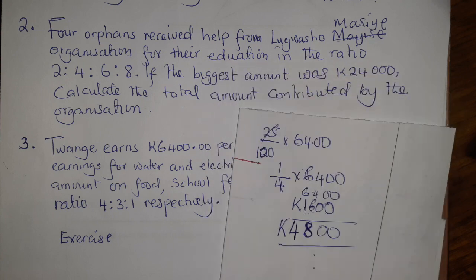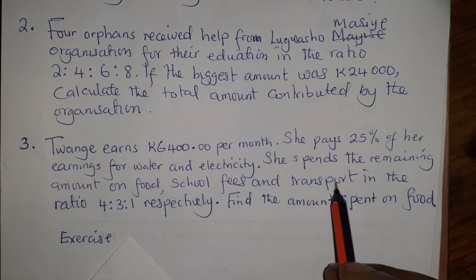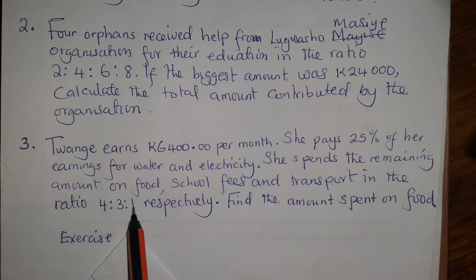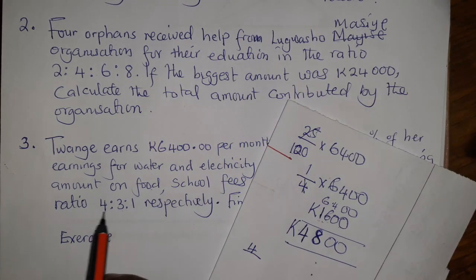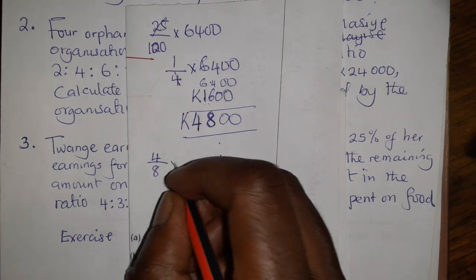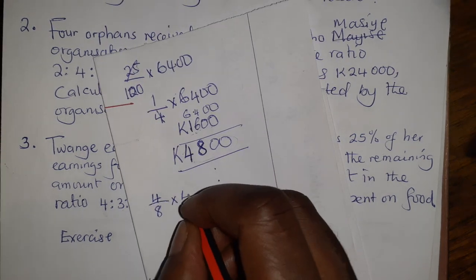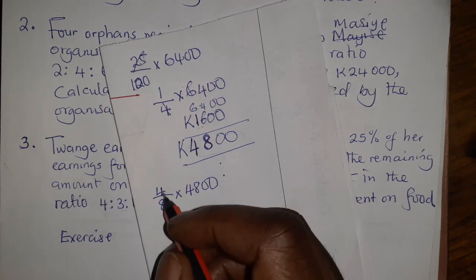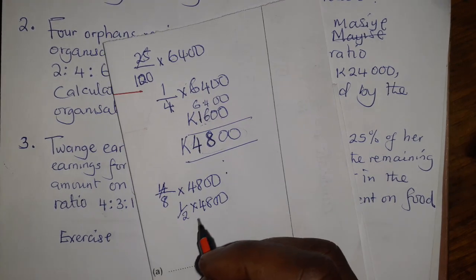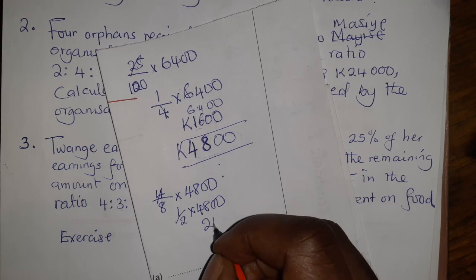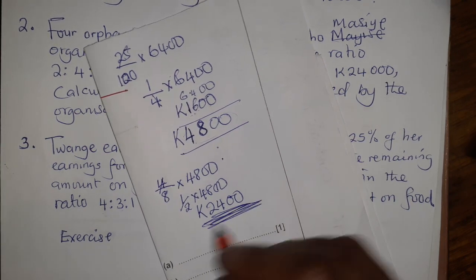We want to find how much is spent on food. Food corresponds to the ratio 4. We add the ratios: 4 plus 3 plus 1 equals 8. So food equals 4 over 8 multiplied by 4,800. Simplifying: 4 over 8 is 1 over 2, so it's 1 multiplied by 2,400. The amount spent on food is 2,400 kwacha.